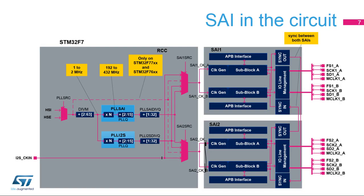The STM32F7 embeds two SAIs. Each SAI can receive a kernel clock, or SAI-CKX, from one of the two internal PLLs, from the I2S-CKIN pad, or from the HSI or HSE oscillators. This last option is not available on all the STM32F7 products. The kernel clock is used by the SAI in order to generate the timing of the serial audio interface when configured in master mode.